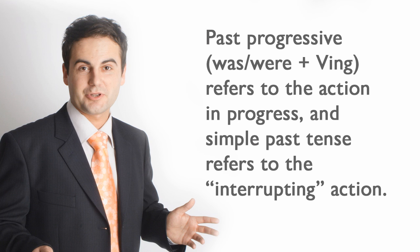Past progressive uses was or were plus verb-ing, which refers to the action in progress. Simple past tense refers to the interrupting action.